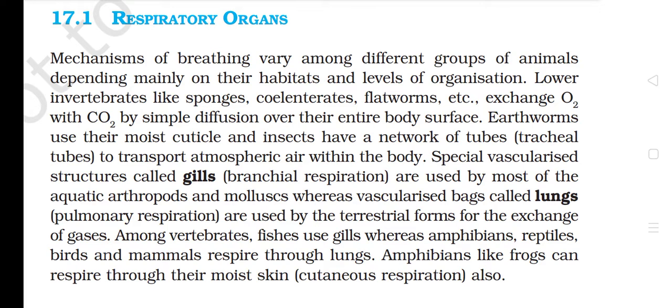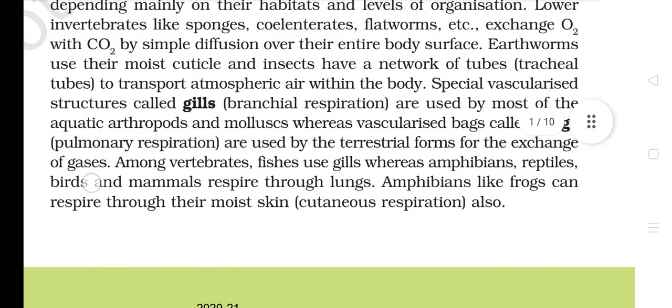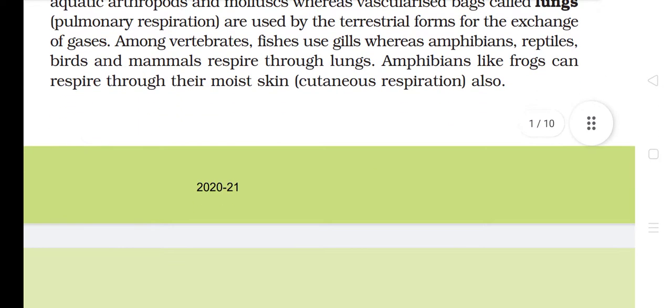Earthworms use their moist cuticle and insects have a network of tubes, tracheal tubes, to transport atmospheric air within the body. Special vascularized structures called gills, branchial respiration, are used by most of the aquatic arthropods and molluscs, whereas vascularized sacs called lungs, pulmonary respiration, are used by the terrestrial forms for the exchange of gases. Among vertebrates, fishes use gills whereas amphibians, reptiles, birds and mammals respire through lungs. Amphibians like frogs can also respire through their moist skin — cutaneous respiration.